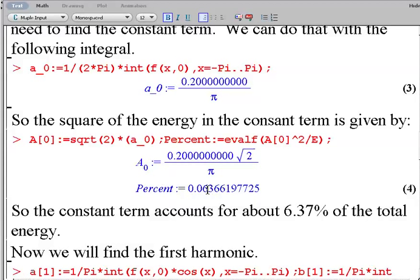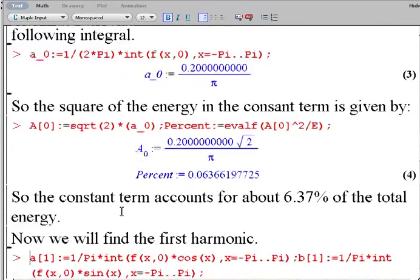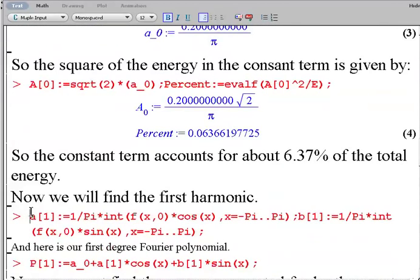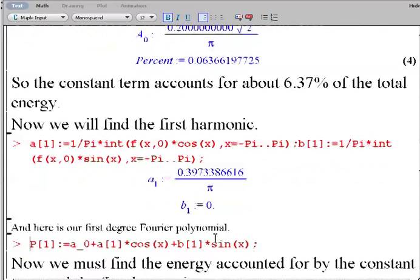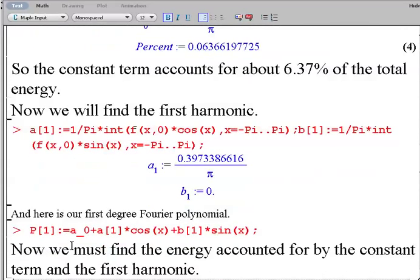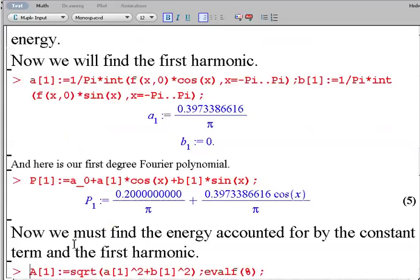Now to do the first degree polynomial, we need to find our a_1 and our b_1. So we get an a_1 and we get a b_1 of zero. We're going to see that all the b's are zero in this particular problem. So here's our first degree Fourier polynomial, calling this thing P_1.